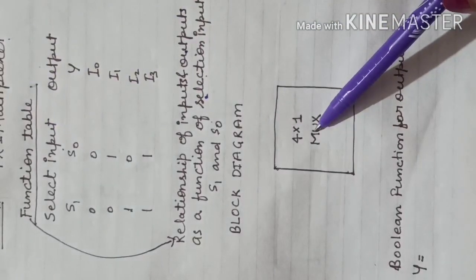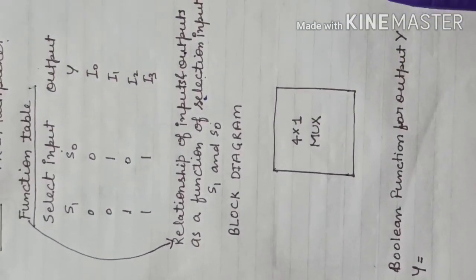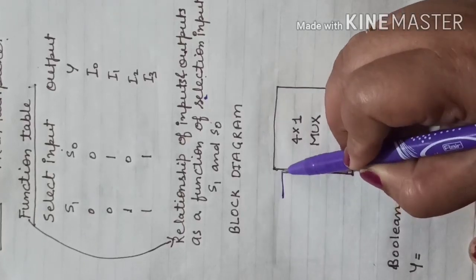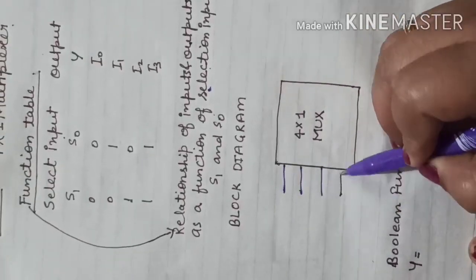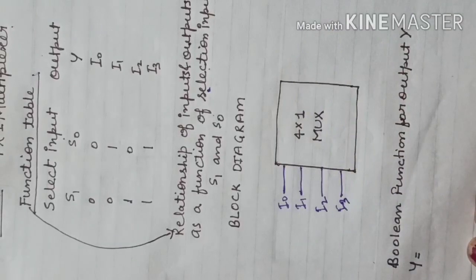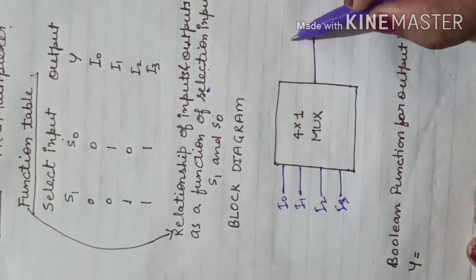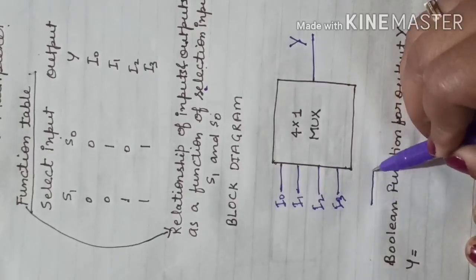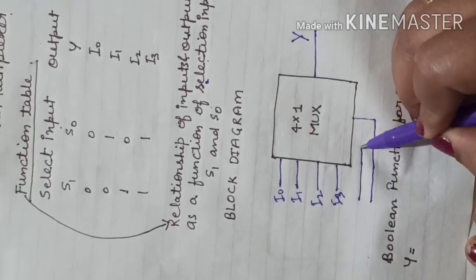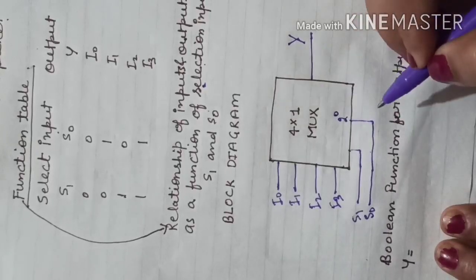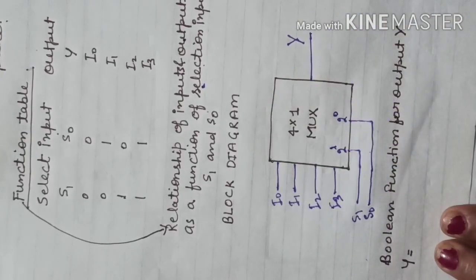Ab hum block diagram par focus karte hain. Here is the block diagram of the 4 cross 1 multiplexer. There are 4 inputs: I0, I1, I2, and I3. There is 1 output Y, and there are 2 selection inputs: S0 and S1. S0 is placed at the least significant position (2^0) and S1 at the most significant position (2^1), so that the bit combinations formed are 00, 01, 10, 11 — representing binary of 0, 1, 2, and 3.